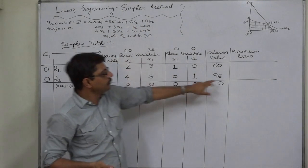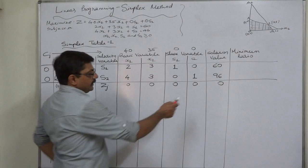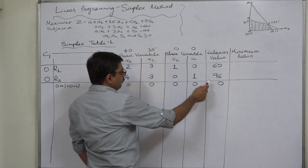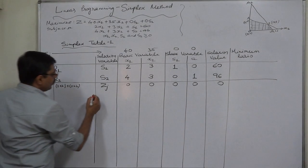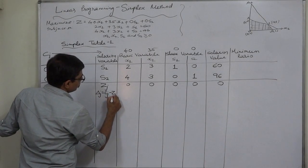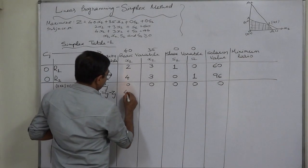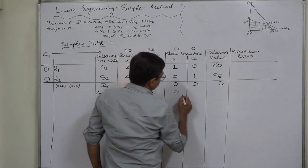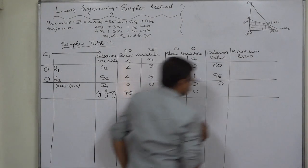The ZJ value for the solution column is 0×60 plus 0×96, so the value of the Z function is 0. This point shows the value of the Z function at different corner points. Now it is the turn of the last row, known as Delta J, that is CJ minus ZJ. So: 40 minus 0 equals 40; 35 minus 0 equals 35; 0 minus 0 equals 0; and 0 minus 0 equals 0.